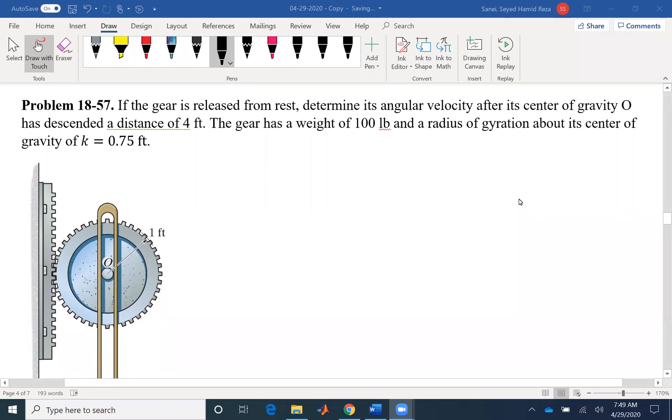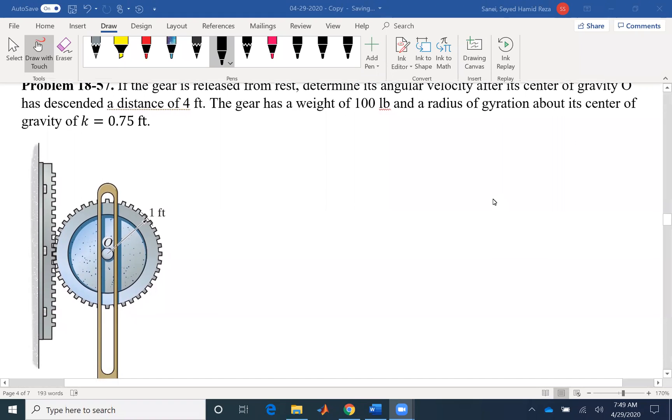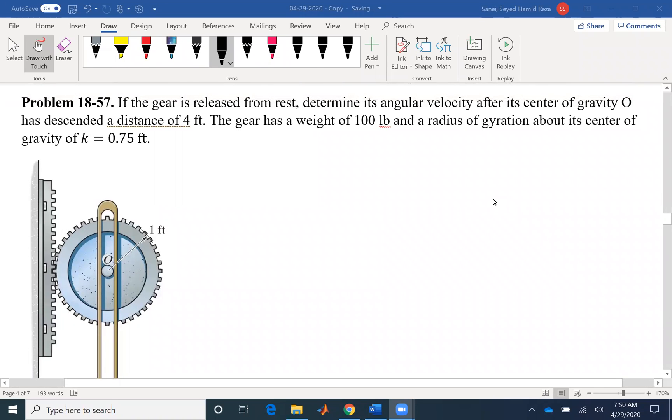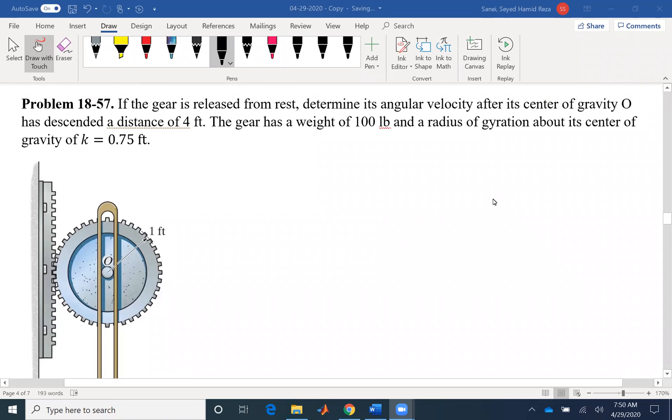So we have the initial angular velocity. We want to find the final angular velocity. If you look at the problem, the only forces that we have here are conservative forces. So the energy is conserved. So it's very easy to write conservation of energy and solve this problem.